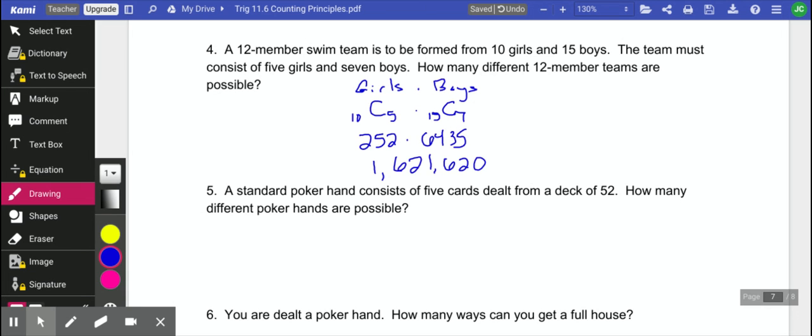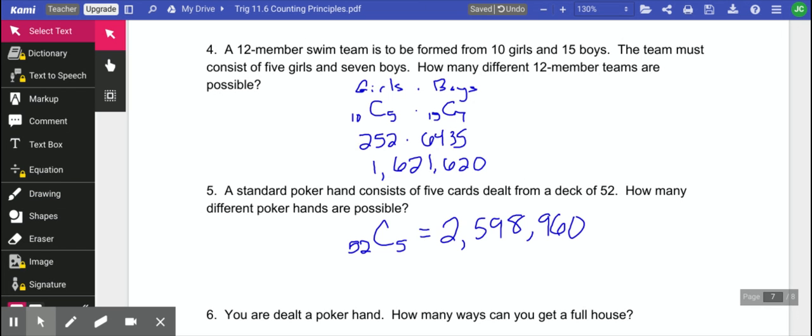If you're playing poker, you get five cards out of a deck of 52. How many different poker hands are possible? Order doesn't matter. They're just dealing the cards to you. So we have 52 and we are going to choose five. So this is a combination. There are 2 million, 2 and a half million different poker hands that you could get.